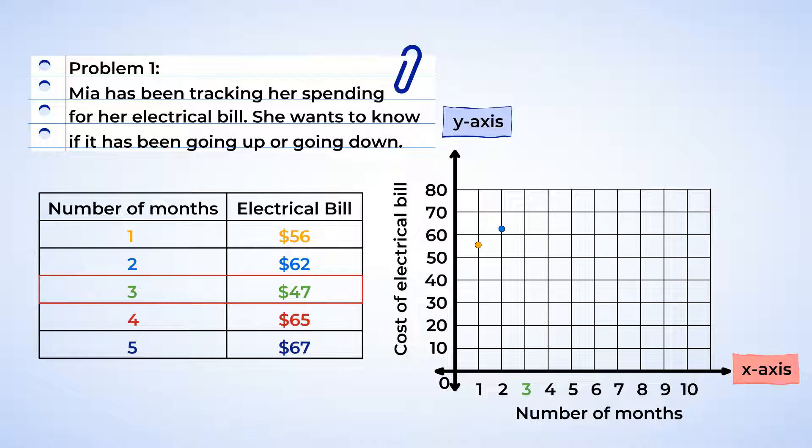All right, next month, we're going to start at the $3 and then move up to $47, which is pretty close to $50. All right, month four is at $65, so we can place the point halfway between $60 and $70.